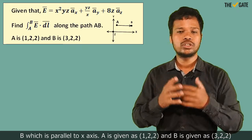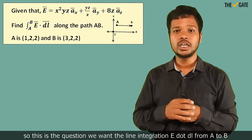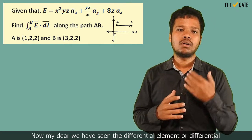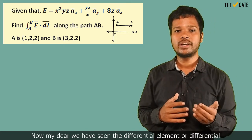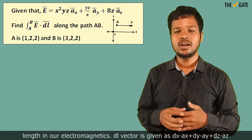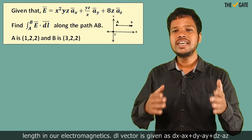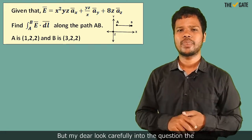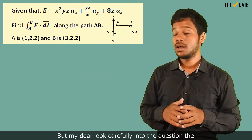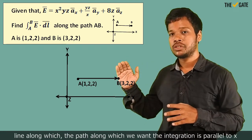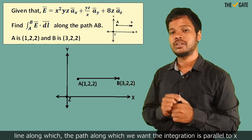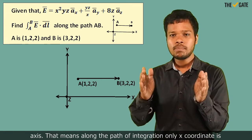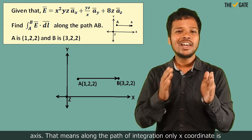So this is the question. We want the line integration E dot dl from A to B. Now, we have seen the differential element or differential length in our electromagnetics: dl vector is given as dx ax plus dy ay plus dz az. But look carefully into the question. The line along which the path for integration lies is parallel to the x-axis. That means along the path of integration, only the x coordinate is changing.